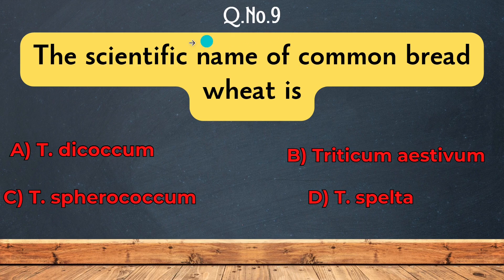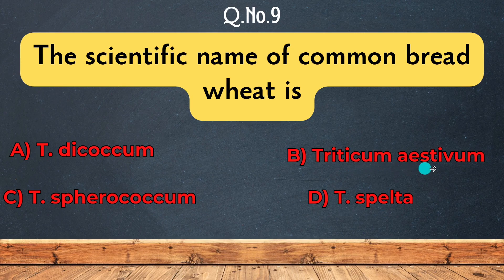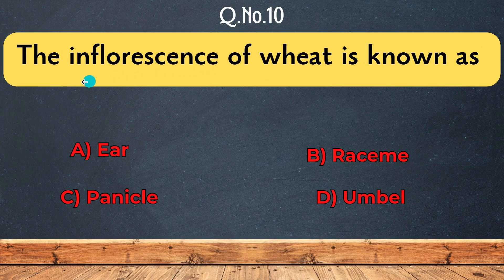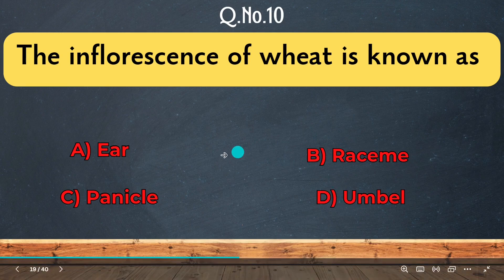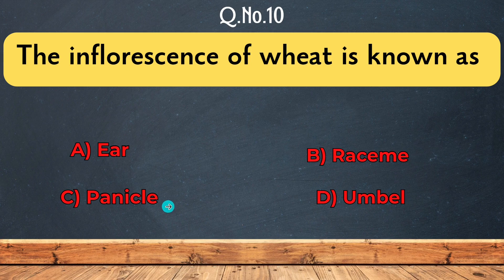Question 9: The scientific name of common bread wheat is Triticum aestivum. Question 10: The inflorescence of wheat is known as — Ear, Panicle, Raceme, or Umbel. The inflorescence of rice is panicle, while the inflorescence of wheat is Ear.